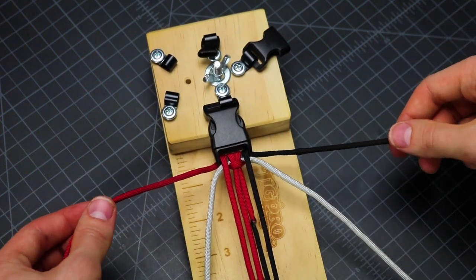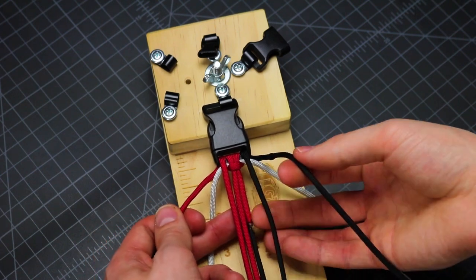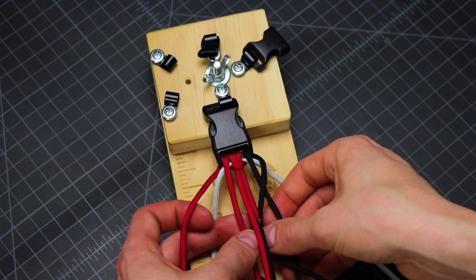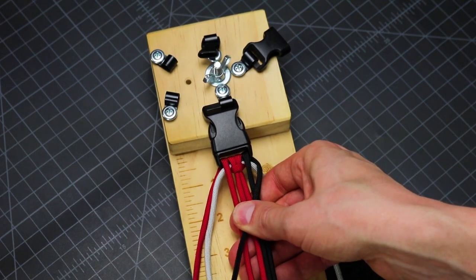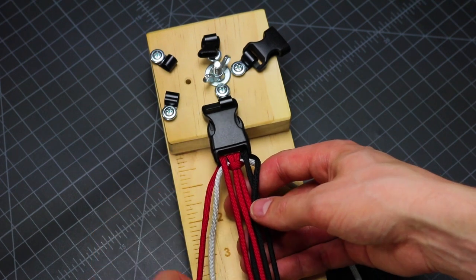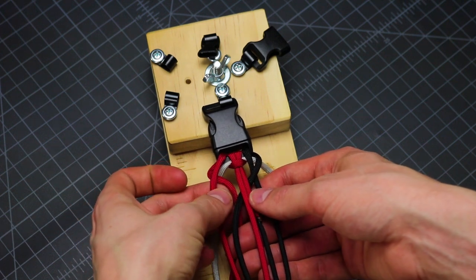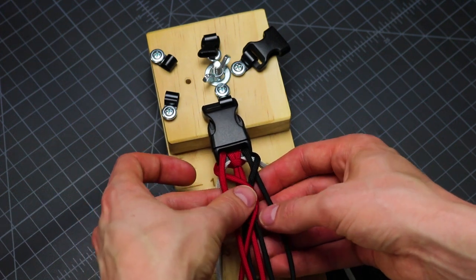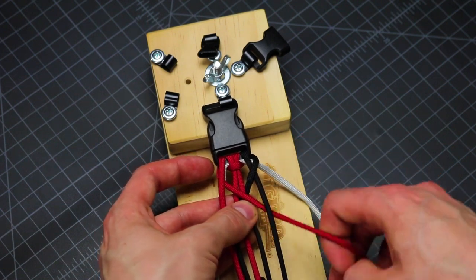So we're going to start with our colored cords and just make a weave like we would with a normal trilobite, which is on one side we go over underneath the middle two and over the left. Now on the other side, we're going to do the opposite. It's going to be under, over, under. So we'll go underneath our left strand, over the top of the middle, and then underneath the right.